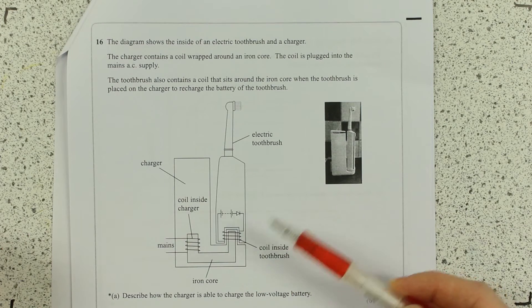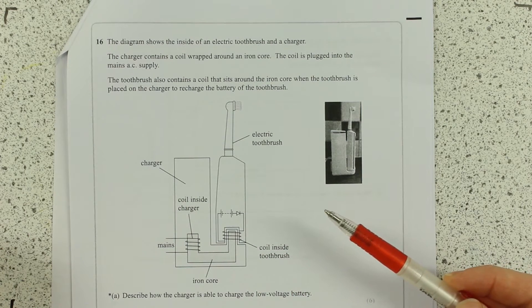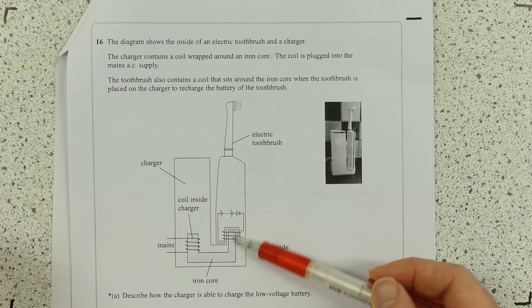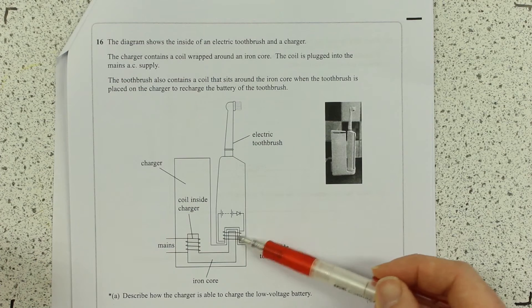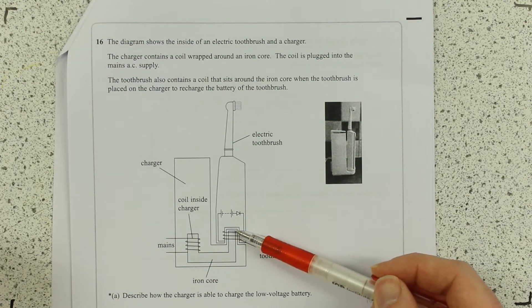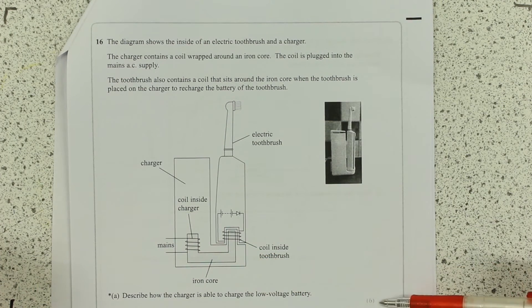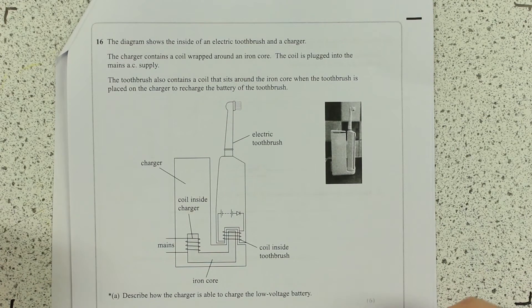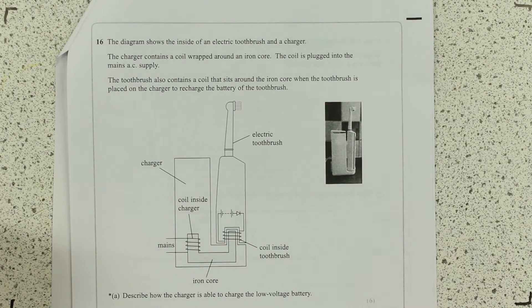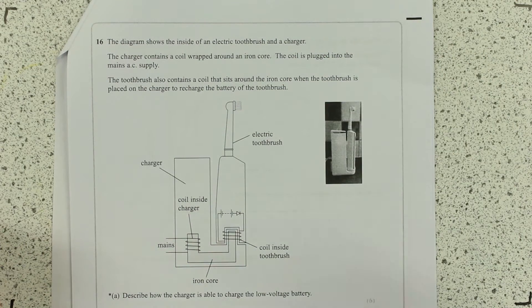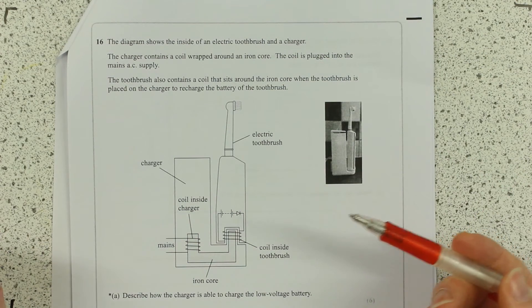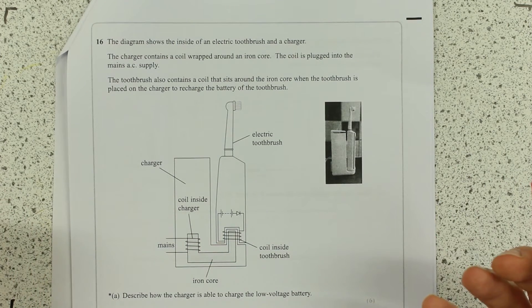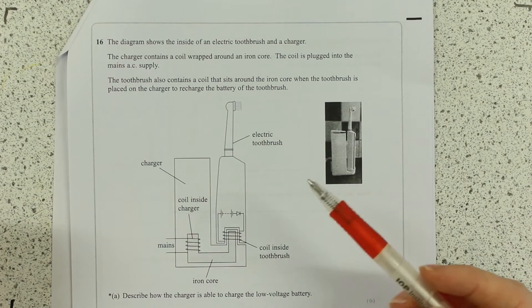If you brought out your standard transformer explanation from GCSE, alternating current induces changing magnetic field, induces alternating EMF in the secondary coil, you probably actually get three marks. So you can do that, but where are the extra marks to distinguish this from a nice easy C grade student who's learnt their revision guide and a higher grade student? You're going to have to read through and see the clues that they're giving you.